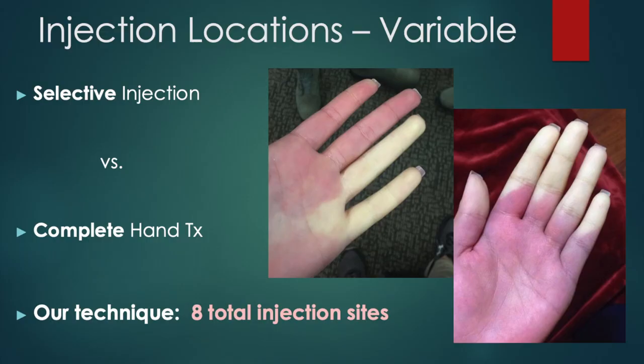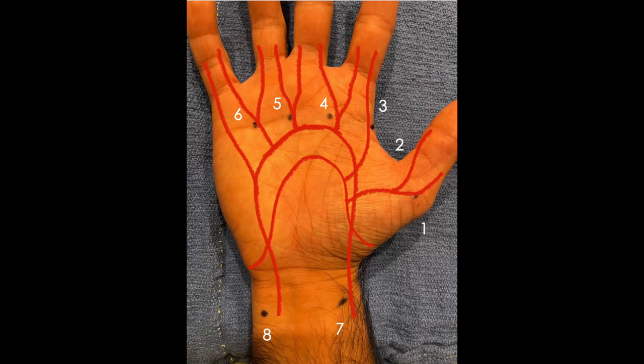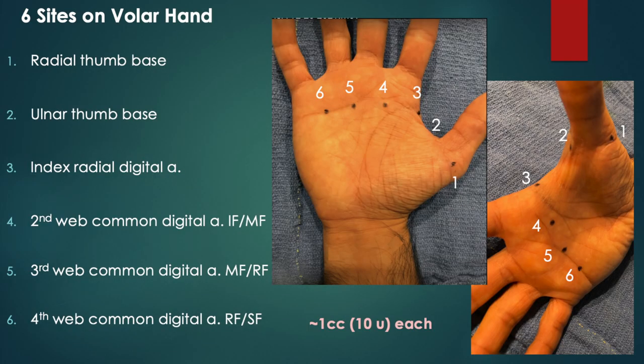Some authors advocate selective injection of only the involved digits, while others recommend complete hand treatment even in the setting of localized disease. Our practice is complete hand treatment with 8 injection sites for inpatient acute ischemia. This photo with superimposed digital vasculature demonstrates the locations of the 8 injection sites relative to arterial supply. We use 6 injection sites on the volar hand to treat the base of the thumb and common digital arteries, with 1 cc — or 10 units — injected at each site. Feel free to pause the video to look back at this as needed.